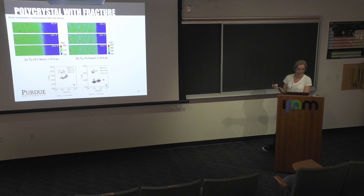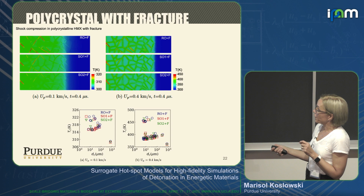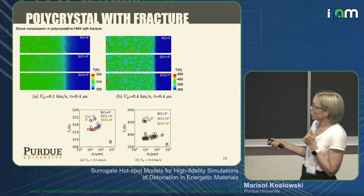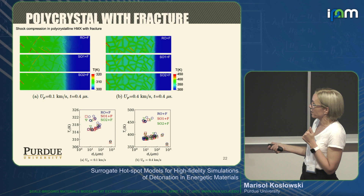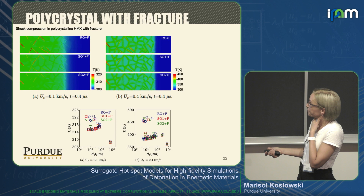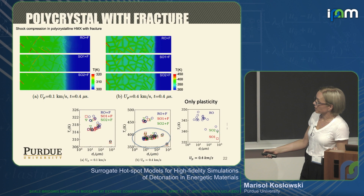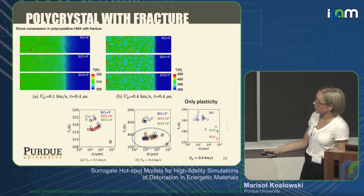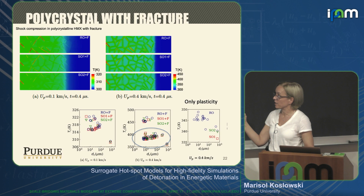To understand the importance of fracture, we took the same microstructure and included fracture — the cracks initiate in the grain boundaries. Now we have hotspots that are very hot: we reach 500 degrees impacting at 400 meters per second, and it's all happening in the grain boundaries due to friction of the grains with respect to each other. If we have only plasticity at 400 meters per second, we are at 350 degrees. With fracture, we are 100 degrees more, and the hotspots are all in the grain boundaries. So this, I guess, solves the discussion: is it fracture or plasticity? In this range of velocities, we think it is fracture and friction. At higher impact velocities, it's void collapse.